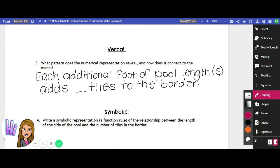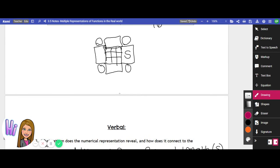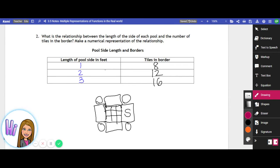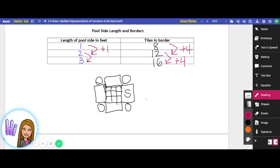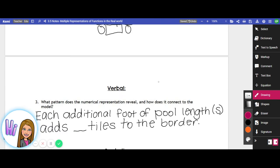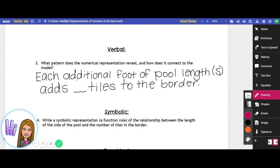To answer that question we actually want to look at the numbers. So up here in the numbers we notice to go from one to two, that's adding one foot. How many tiles did we add to go from eight to twelve? That's a change of four. To go from two to three feet for the side length is a change of again adding four more tiles to that border. So for every foot that we change, we are adding four tiles to the border.